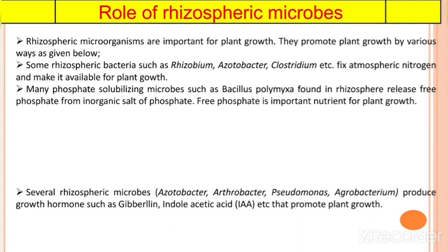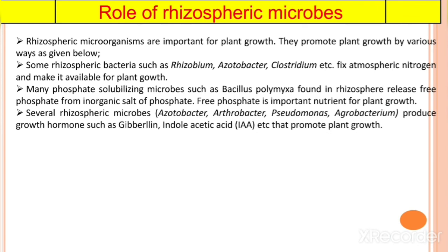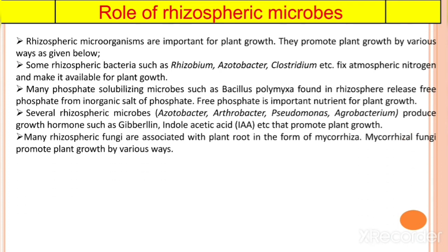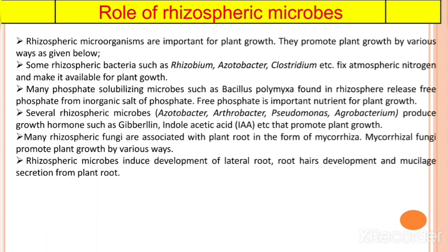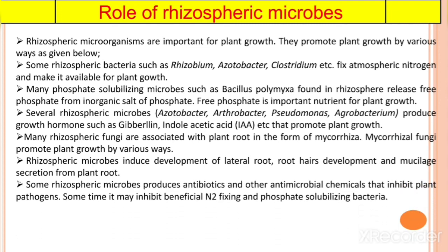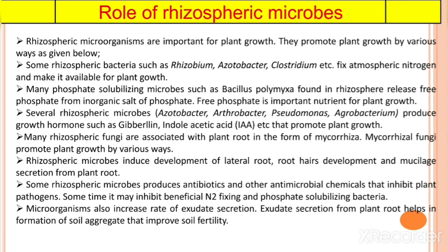Several rhizospheric microbes produce growth hormones such as gibberellin, indole acetic acid, etc., that promote plant growth. Many rhizospheric fungi are associated with plant roots in the form of mycorrhiza, and mycorrhizal fungi promote plant growth. Rhizospheric microbes induce development of lateral roots, root hair development, and mucilage secretion from the plant root. Some rhizospheric microbes produce antibiotics and other antimicrobial chemicals that inhibit plant pathogens. Microorganisms also increase the rate of exudate secretion, which helps in the formation of soil aggregates that improve soil fertility.